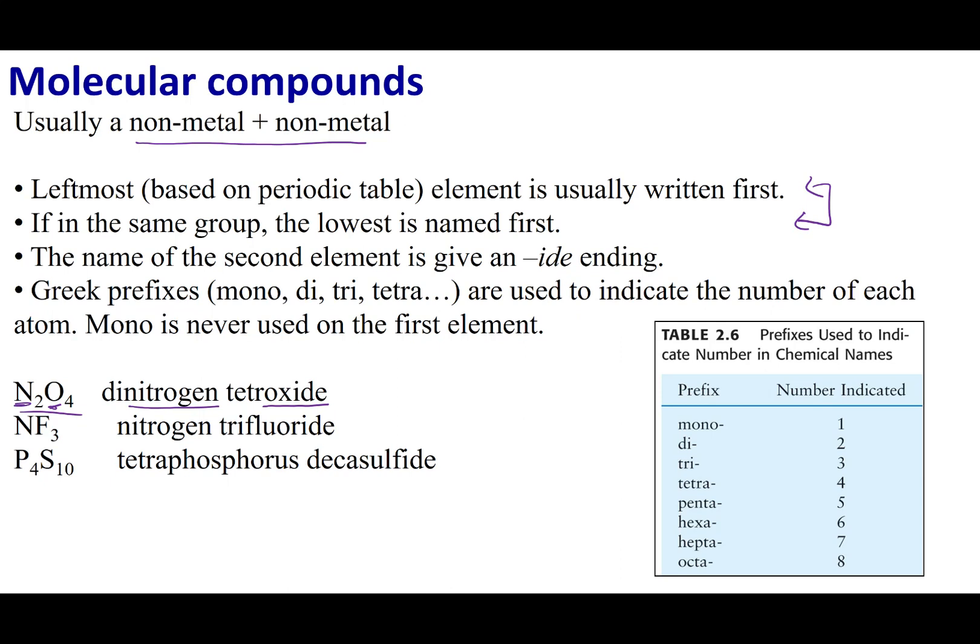Then what you want to do is you want to tell me how many of each atom is in this molecular compound, and to do this we are going to use prefixes. Now you guys are going to use the Greek prefixes, and you guys can remember your shapes from elementary school. For example, a triangle is going to have three sides, a pentagon has five sides, a hexagon has six, and you can work your way down. You're going to indicate the number of atoms of that particular element in the compound.